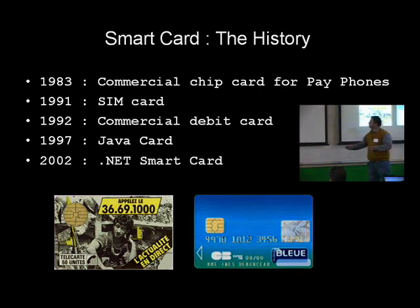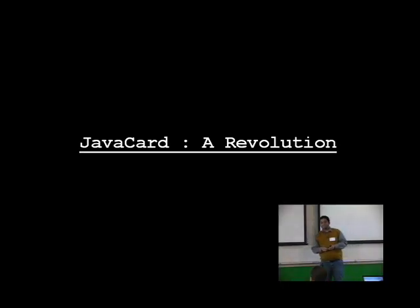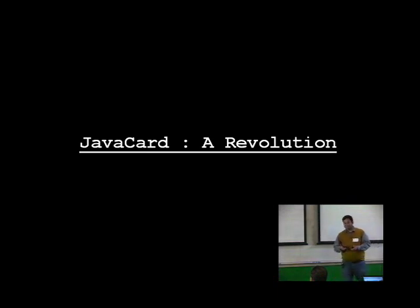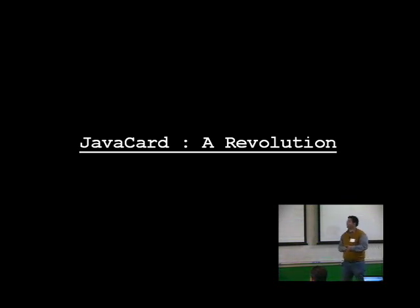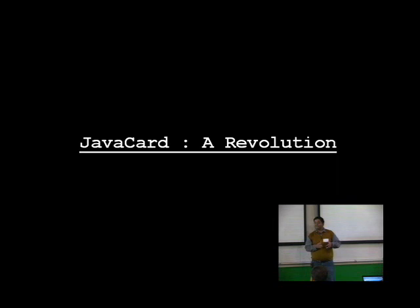Starting with Java Card — which I call a revolution — in the sense that we took Java to some unknown territories, to some unimaginable form factor. Imagine running Java in a device which has memory of a few KBs and a CPU which is 8 to 16 bits. It was really revolutionary because it was not even imagined by the creators of Java that it could run in such a form factor. I'd like to quote ex-chairman of Sun Microsystems, Scott McNealy, who once said that putting Java in a smart card is something like playing golf in a telephone booth.